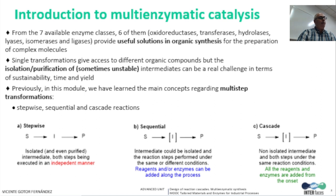However, the isolation and purification of sometimes unstable intermediates is a problem, especially when several individual steps are involved in a chemical route, as occurs with stepwise approaches. Interestingly, the combined use of enzymes in one pot using a unique vessel improves the sustainability of a chemical route, and this can be possible in a sequential manner — when reagents can be added, or reaction conditions such as temperature or pH can be changed.